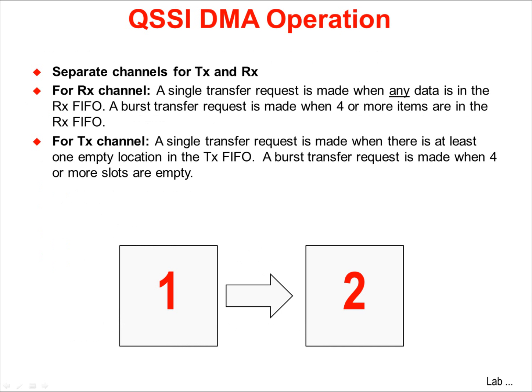There are separate channels for transmit and receive. When enabled, the SSI will assert a DMA request for the receive or transmit FIFO to transfer data. For the receive channel, a single transfer request will be made when any data is in the receive FIFO. A burst transfer request will be made when four or more items are in the receive FIFO. For the transmit channel, a single transfer request will be made when there is at least one empty location in the transmit FIFO. A burst transfer request will be made when four or more of the slots are empty.